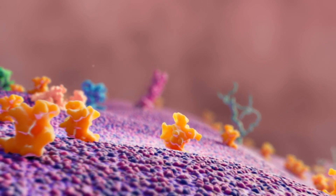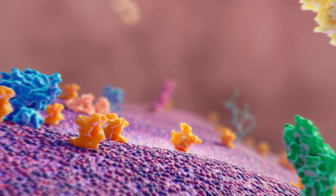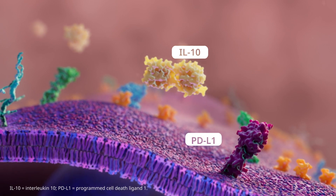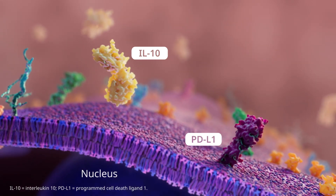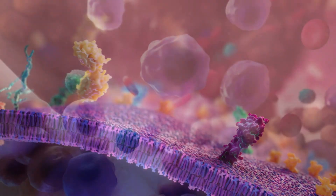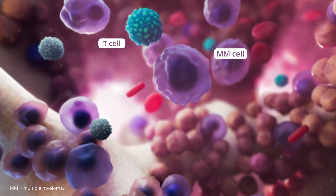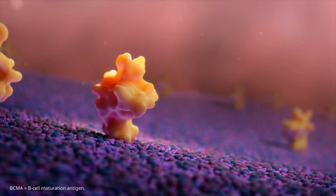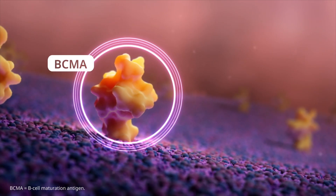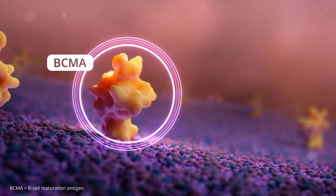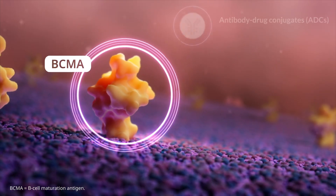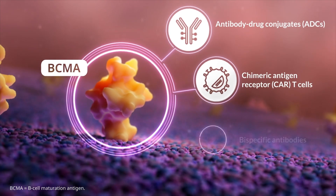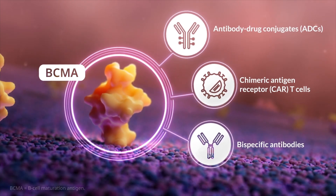Multiple myeloma cells with high levels of BCMA also express IL-10, PD-L1, and other immune regulatory genes that could suppress the immune response in the bone marrow microenvironment. Currently, three treatment classes for targeting BCMA are being explored in multiple myeloma: antibody drug conjugates, CAR T-cells, and bispecific antibodies.